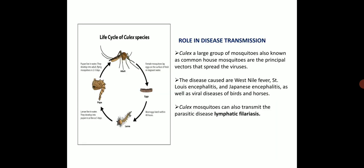Coming to the life cycle of Culex species, it is completed in 4 stages: egg, larvae, pupae and the adult. Female mosquitoes lay eggs on the surface of fresh stagnant water. Most eggs hatch within 48 hours and the larvae live in water and they develop into pupae in 5 days. The pupae live in water and they develop into adult flying mosquitoes in 2 to 3 days.